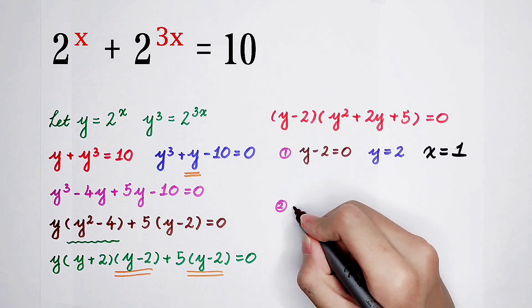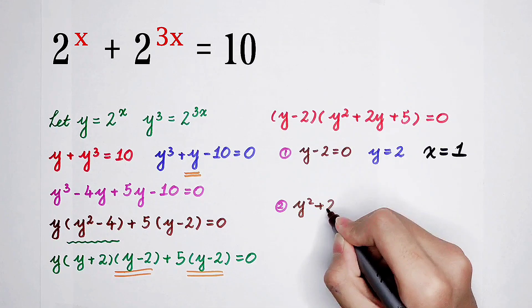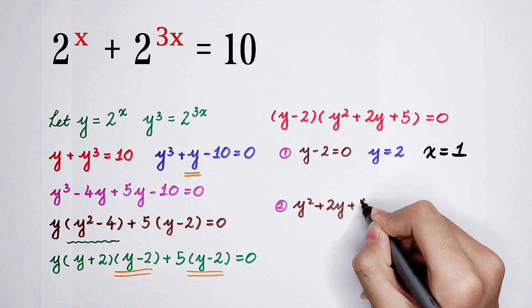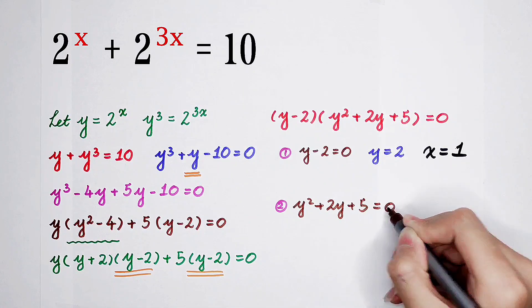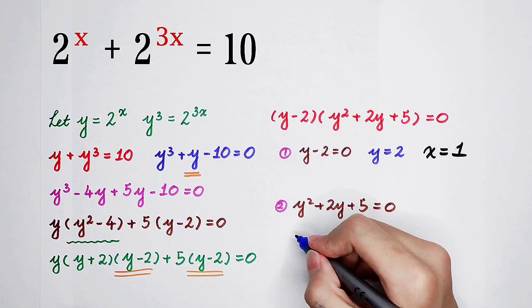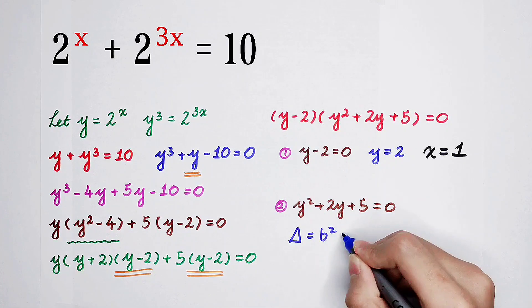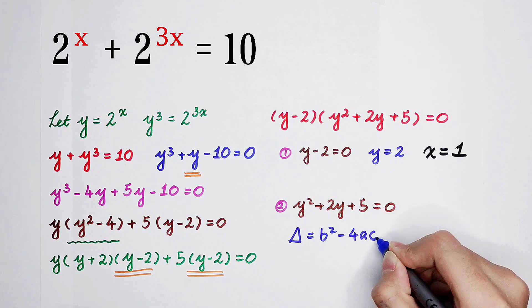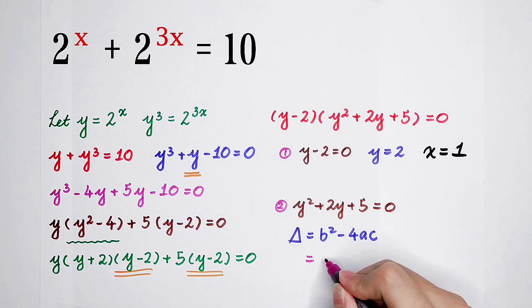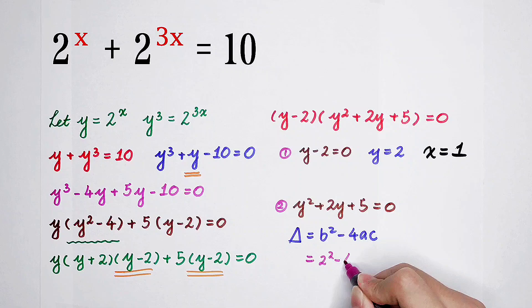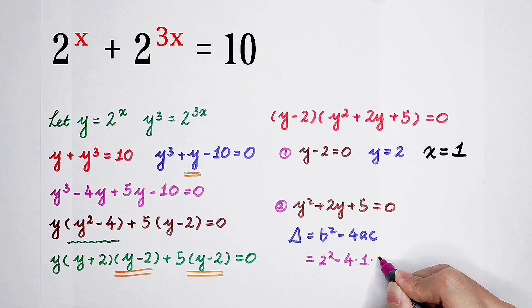And the second case, that is y squared plus 2y plus 5 equals 0. Because delta equals b squared minus 4 times a times c, it is 2 squared minus 4 times 1 times 5.